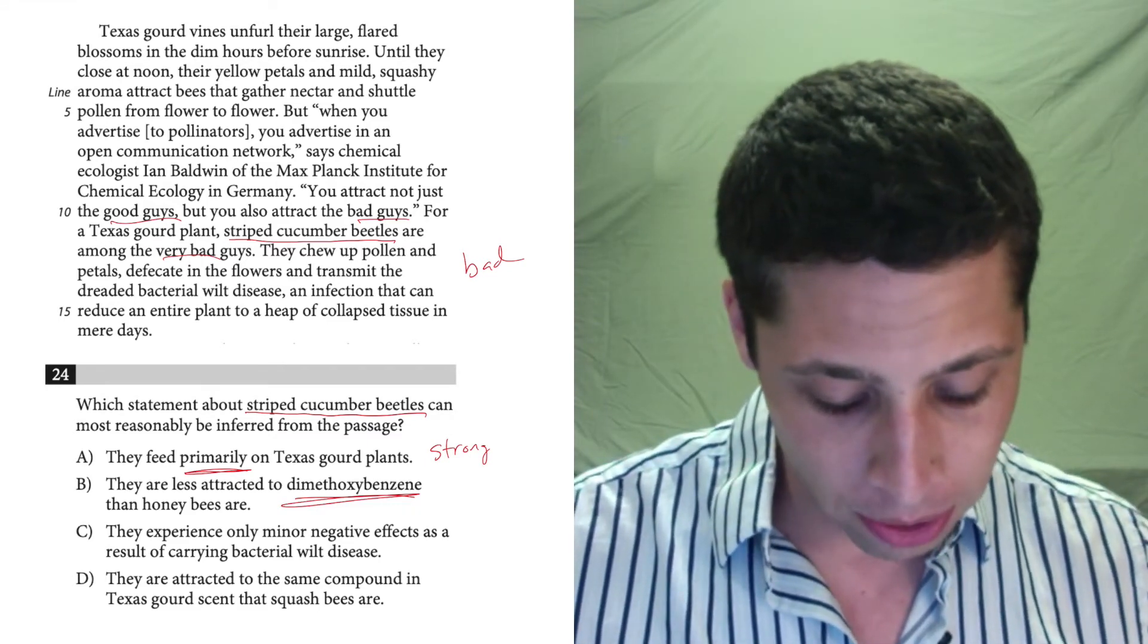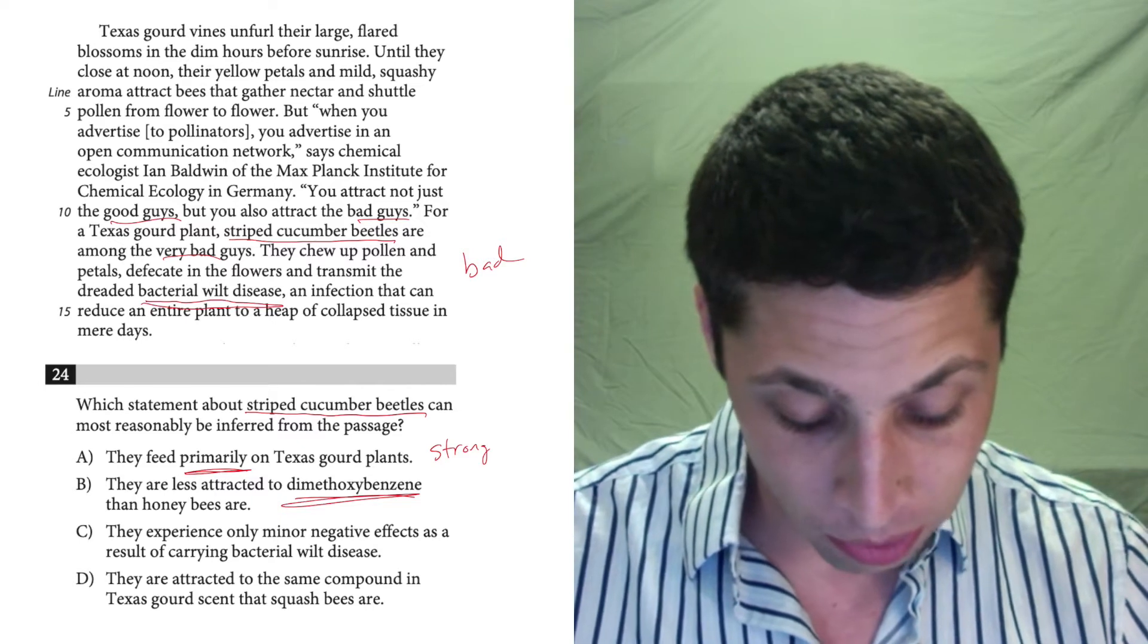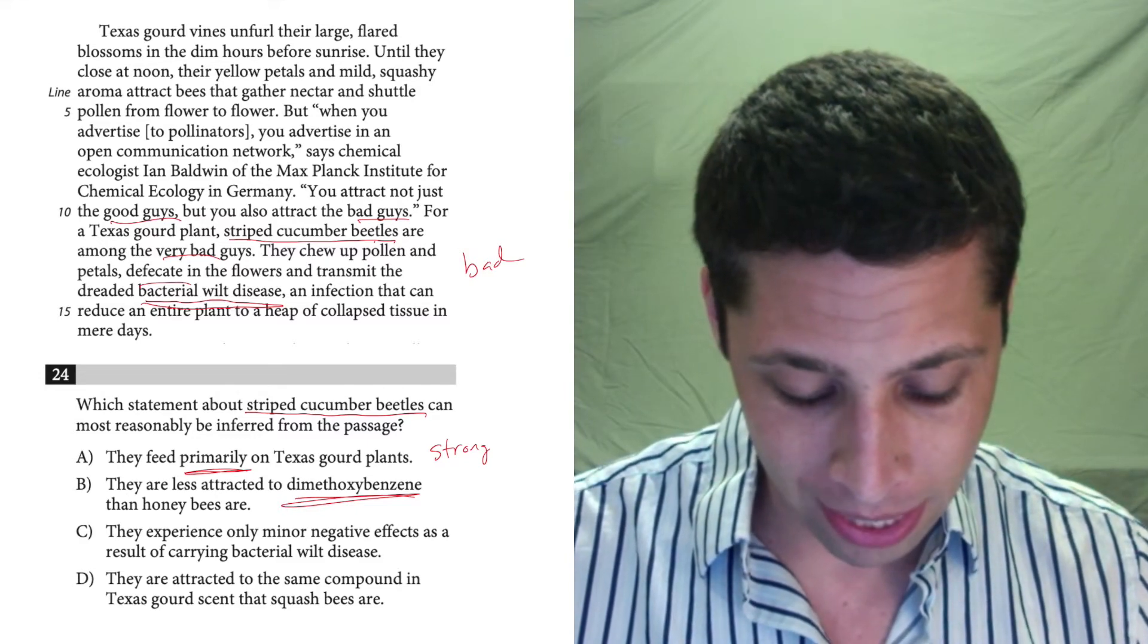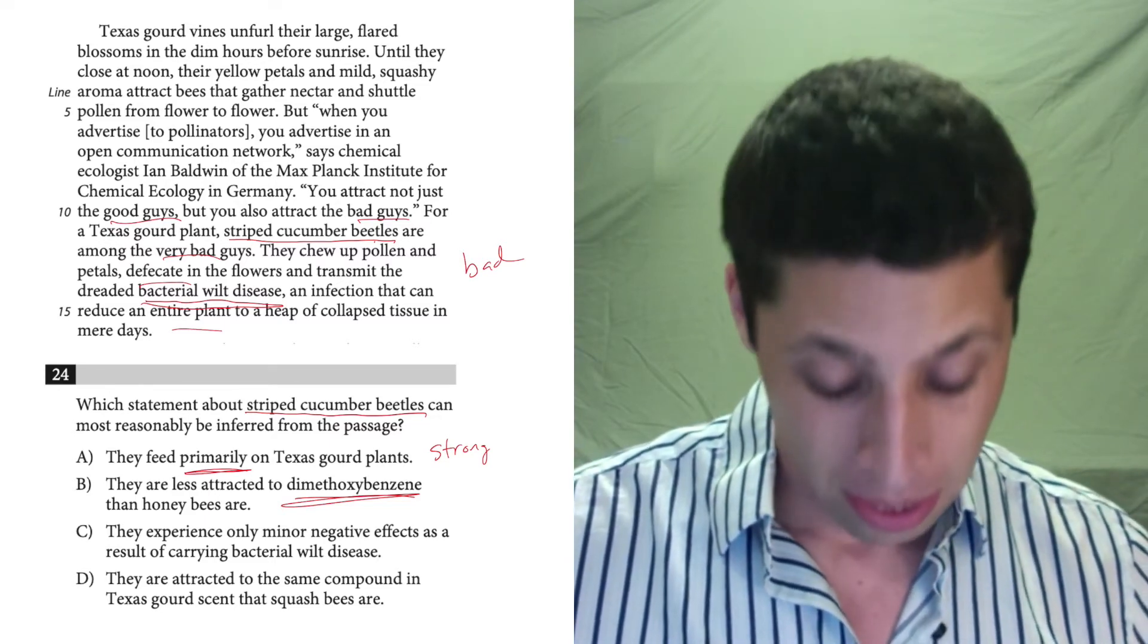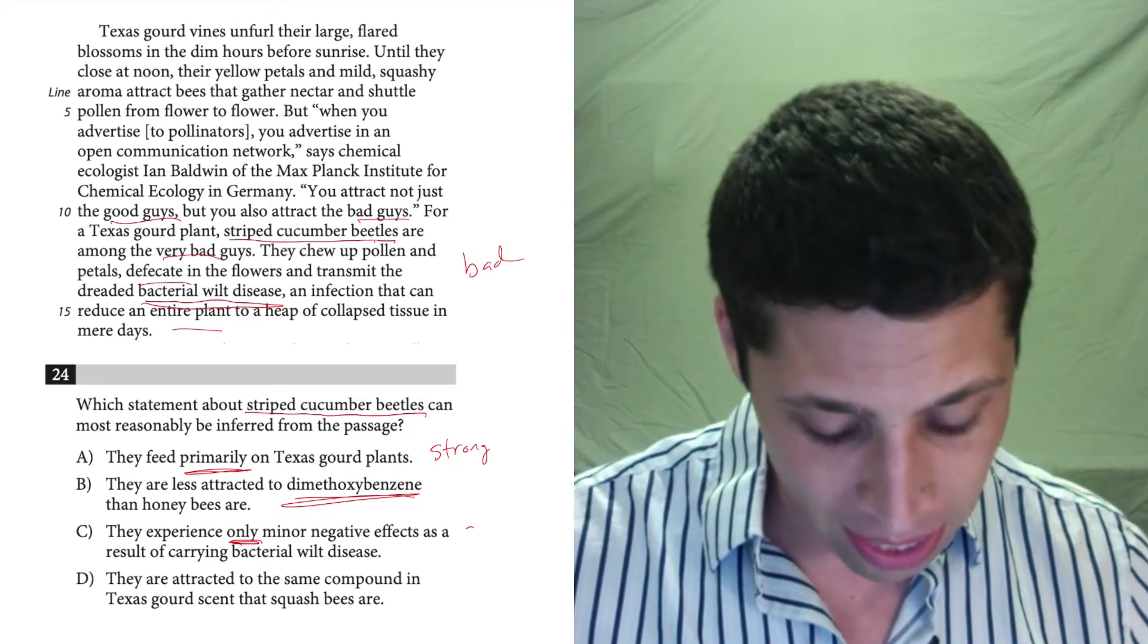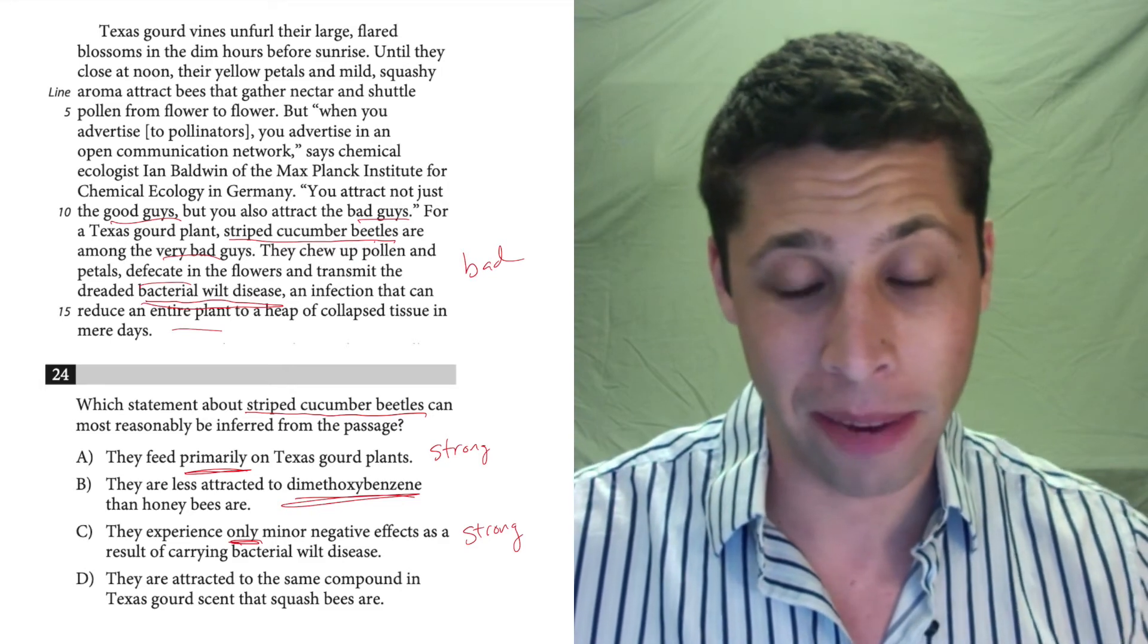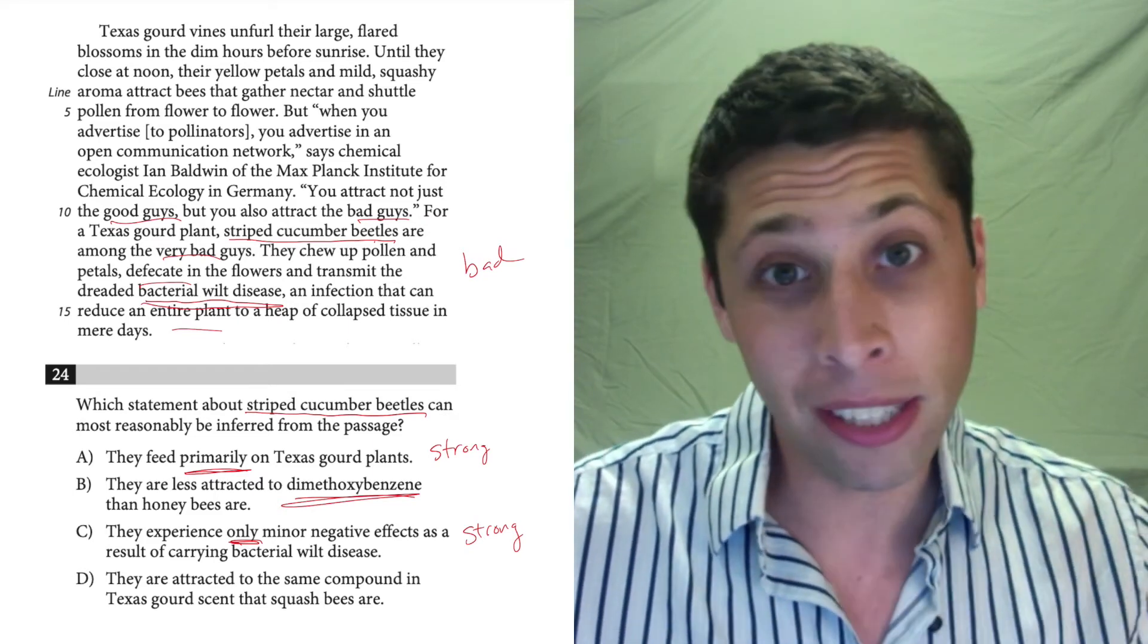Choice C, they experience only minor negative effects as a result of carrying bacterial wilt disease. Well, they do talk about this bacterial wilt disease here, and they do suggest that the beetles transmit it by defecating. And it does hurt the plants. It doesn't say anything about it hurting the beetles, though. This is one that might be true, but it also has this strong word only. That's a word I know to be nervous of for the same reason as the word primarily. It's a very strong word on the SAT.